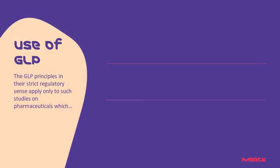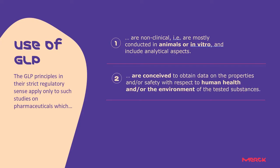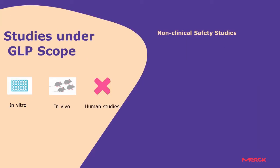The GLP principles in their strict regulatory sense apply only to studies on pharmaceuticals which are non-clinical — that is to say, mostly conducted in animals or in vitro and including analytical aspects — conceived to obtain data on the properties and/or safety with respect to human health and/or the environment of the tested substances, and intended to be submitted to a national registration authority for the purposes of registering or licensing the tested substance or any product derived from it.